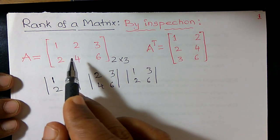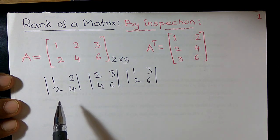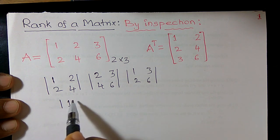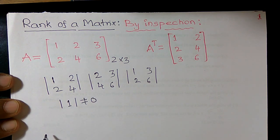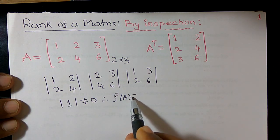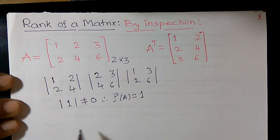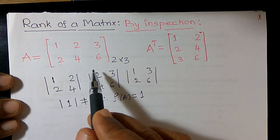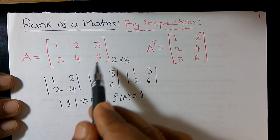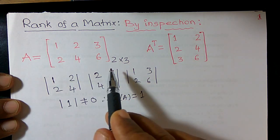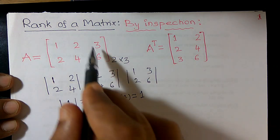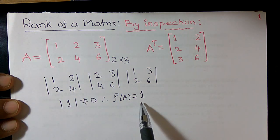It is not possible to construct a minor of order 3. I can construct a minor of order 1 which is not equal to 0. Therefore, the rank of the given matrix, denoted row of A, is equal to 1. We know the order of this matrix is 2×3, meaning the maximum rank may be 2 or 3.